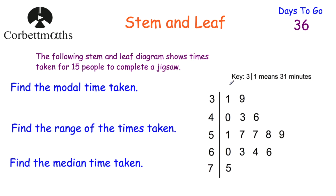Sometimes you might be given a stem and leaf diagram already drawn for you and asked to work out things such as the mode, the range, or the median. Here we've got a stem and leaf diagram showing the time taken for 15 people to complete a jigsaw. The key says 3 | 1 means 31 minutes, so we have 31 minutes, 39 minutes, 40 minutes, 43 minutes, 46 minutes, and so on. Find the mode, the range, and the median time taken — press pause now to work out these three answers.